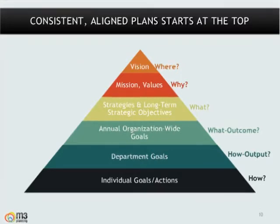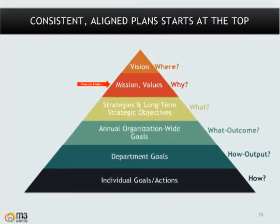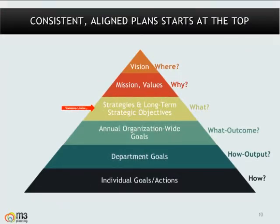Let's start at the top of the pyramid and talk about your vision — this is the peak of the mountain and answers the question: where do you want to be in three to five years? Next, we've got our mission and values — our core ideology that answers the question: why do we exist? Why do we do what we do on a day-to-day basis? Then we've got our long-term strategic objectives and strategies — the what — what are we going to do within the next three to five years to reach our vision?